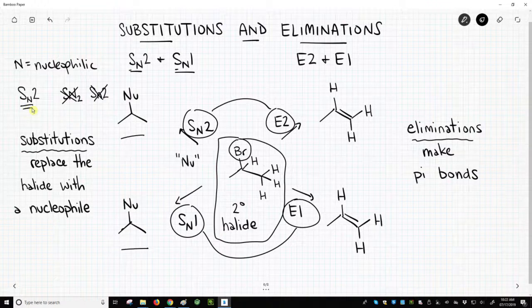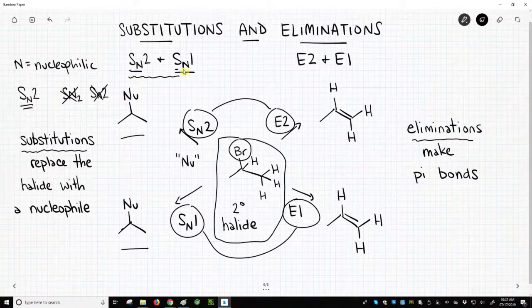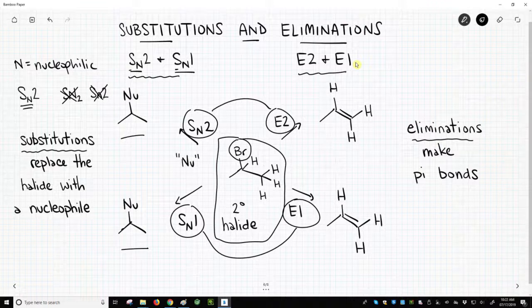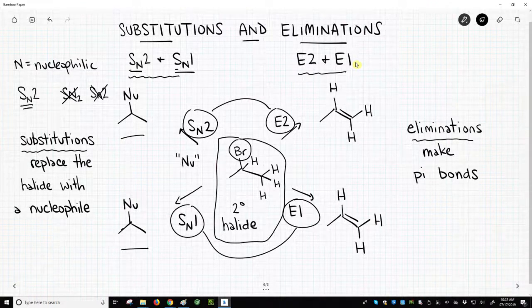But the proper form – and I think communication in proper ways is important – is capital letter for the S, capital N which is subscripted, and then the number. The same goes for elimination. That's a capital E and a number on the same line. It's not subscripted. So these are the substitutions and eliminations that we will encounter in this playlist on alkyl halides.